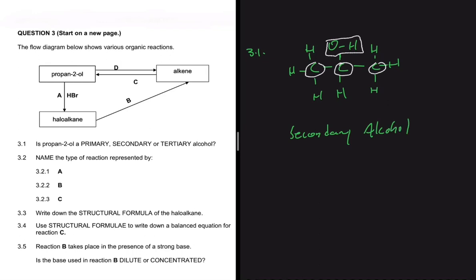So if the carbon bonded to the OH is bonded to one other carbon, that makes it a primary alcohol. If it is bonded to two other carbons, that makes it a secondary alcohol. And as you would have guessed, if it's bonded to three other carbons, that would make it a tertiary alcohol.